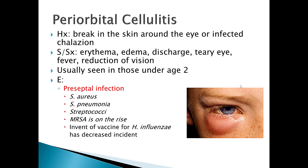Periorbital cellulitis typically has a history of a break in the skin around the eye or potentially an infected chalazion. Someone might say they got slapped with a branch, a cat scratch, or a scratch from a child. Signs and symptoms include edema, erythema, purulent discharge, and a teary eye.